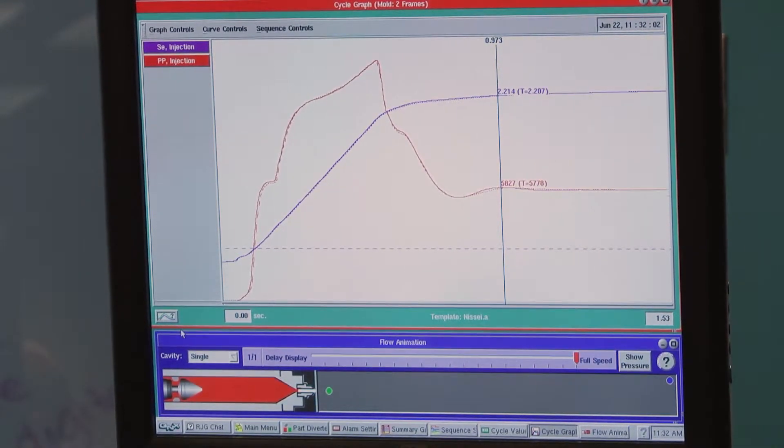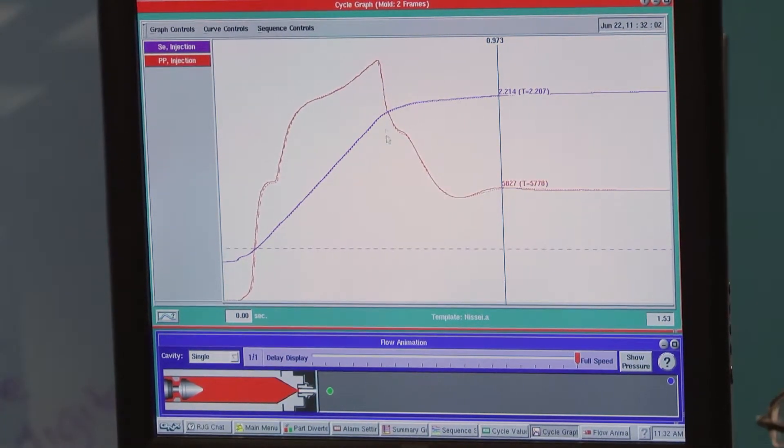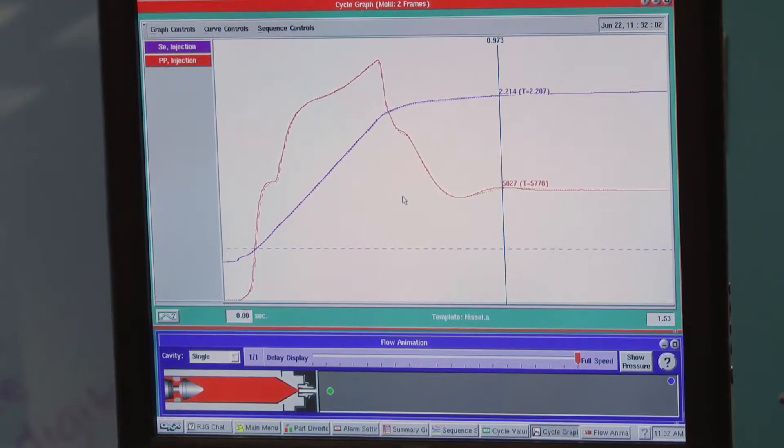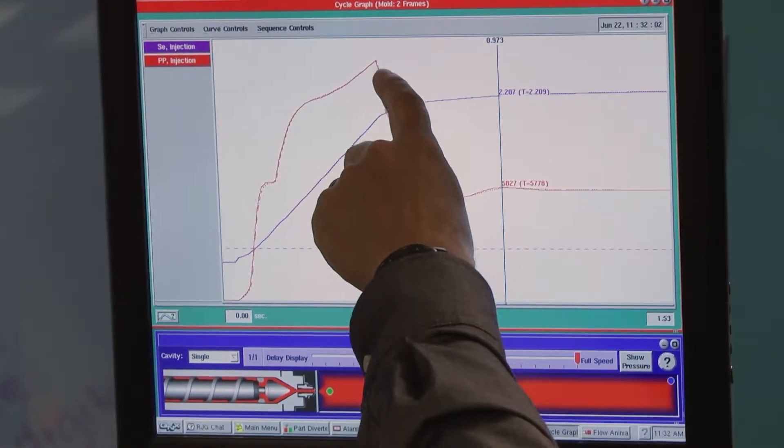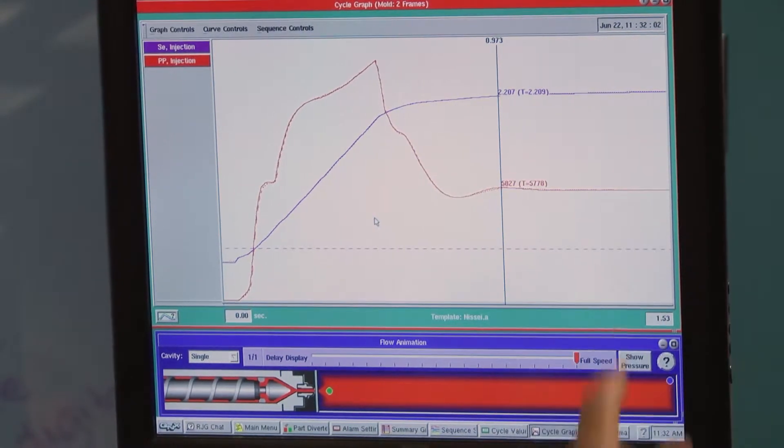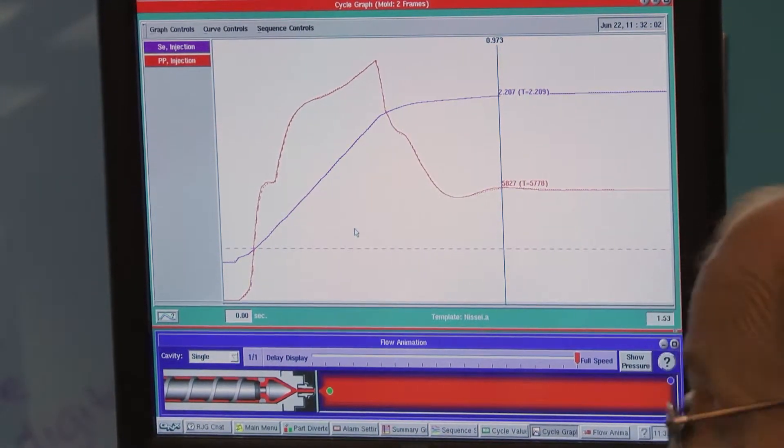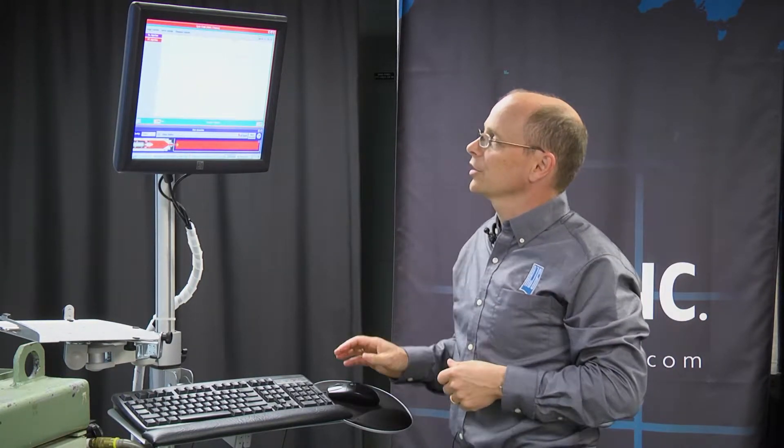If we try to move this mold to another press that has a faster response where it gets to hold pressure sooner, or a slower response where it takes longer, that will have an impact on the process as well. We can see the performance of the machine in the curve.